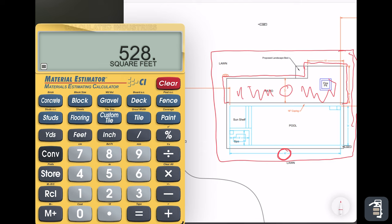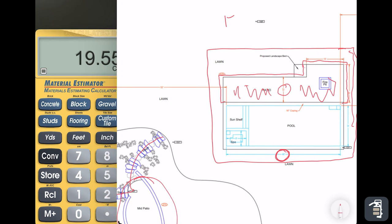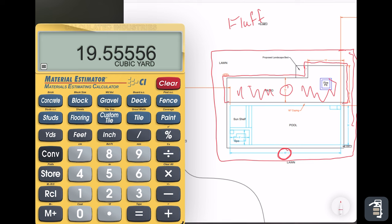That's going to equal 19.5 cubic yards. Now in excavation, you are going to have what I call fluff. Fluff is when you excavate—you have extra material. It's packed right now, but when you excavate it, it turns into a little bit of fluff, so we're going to add five percent to that.